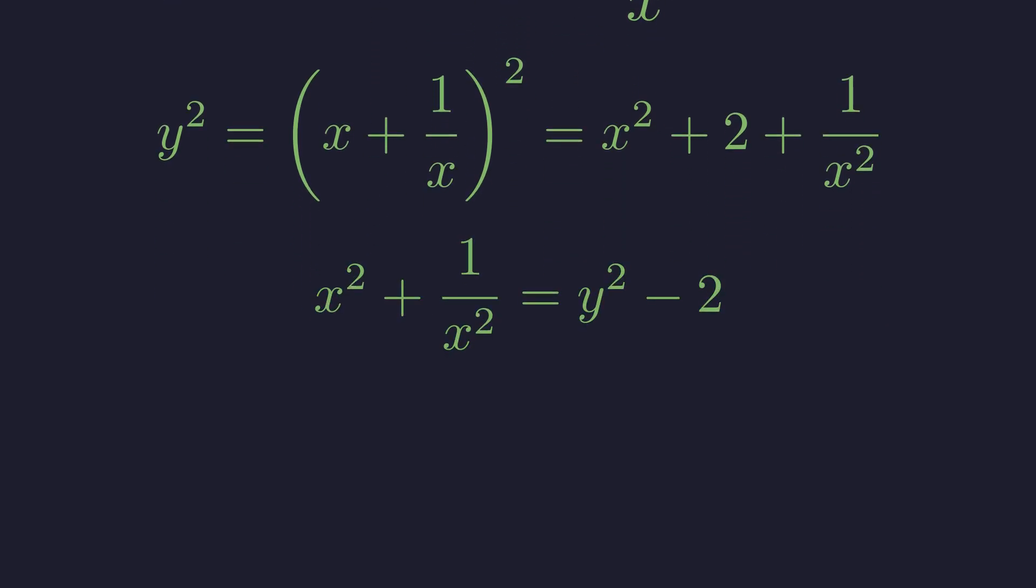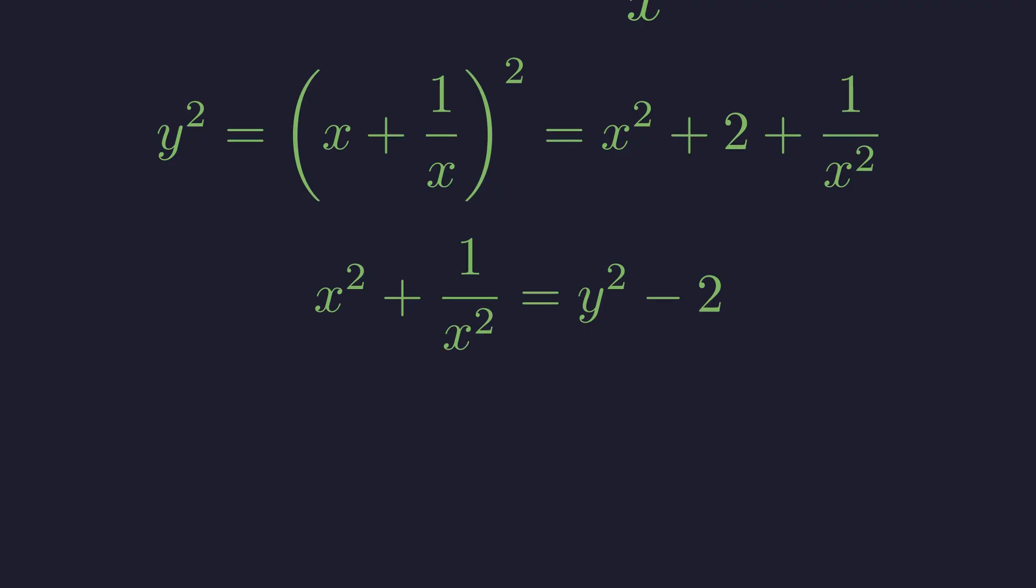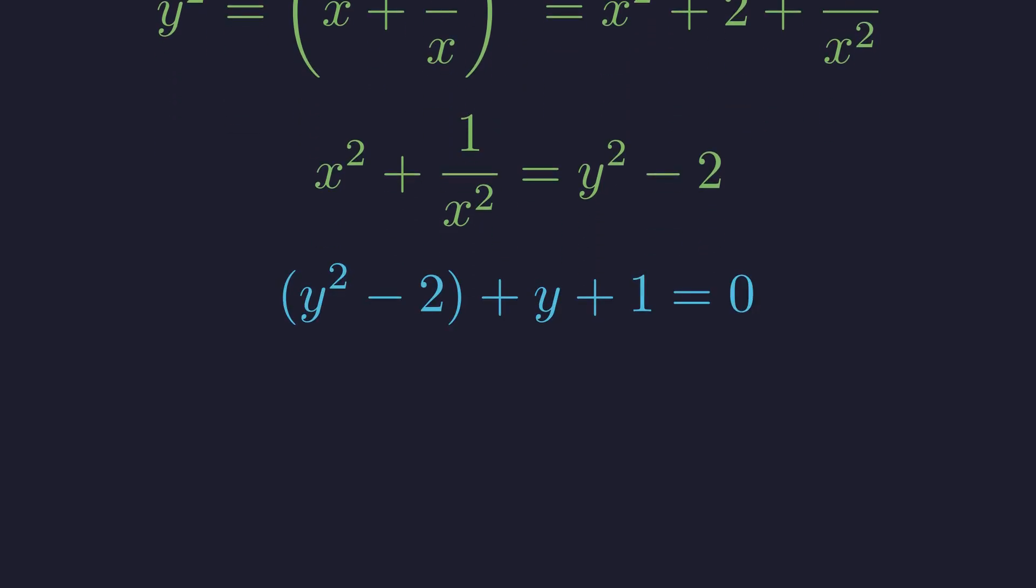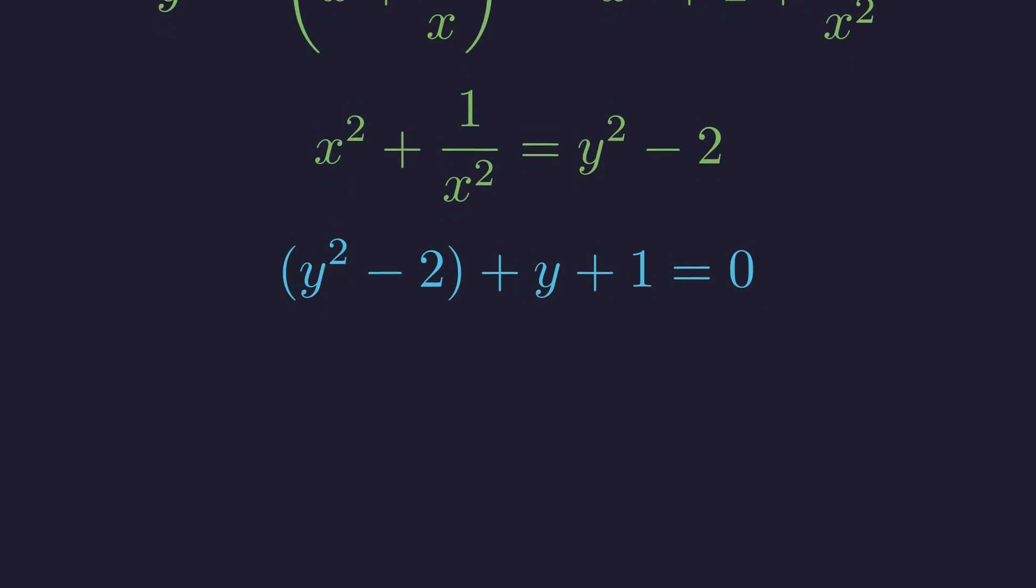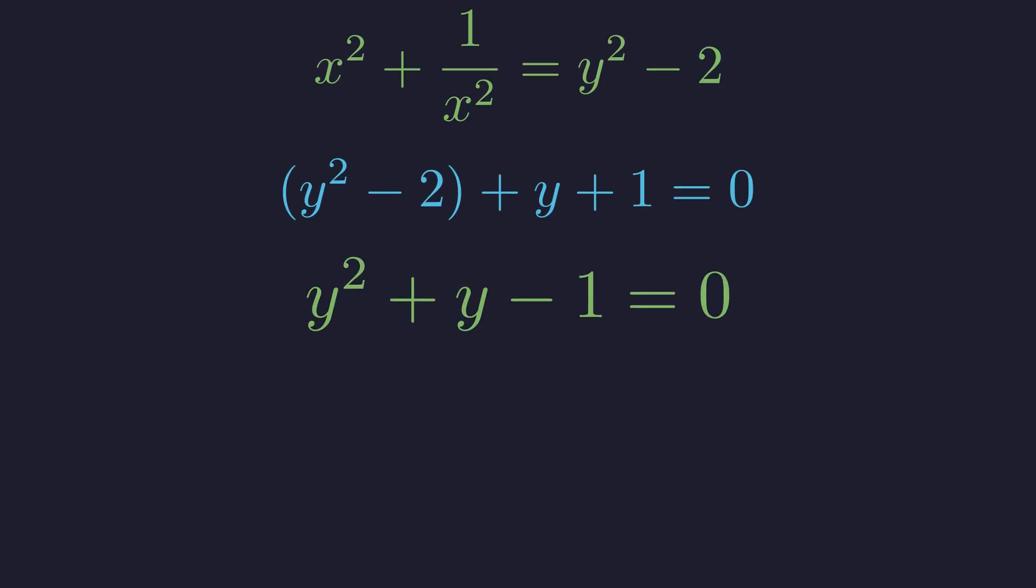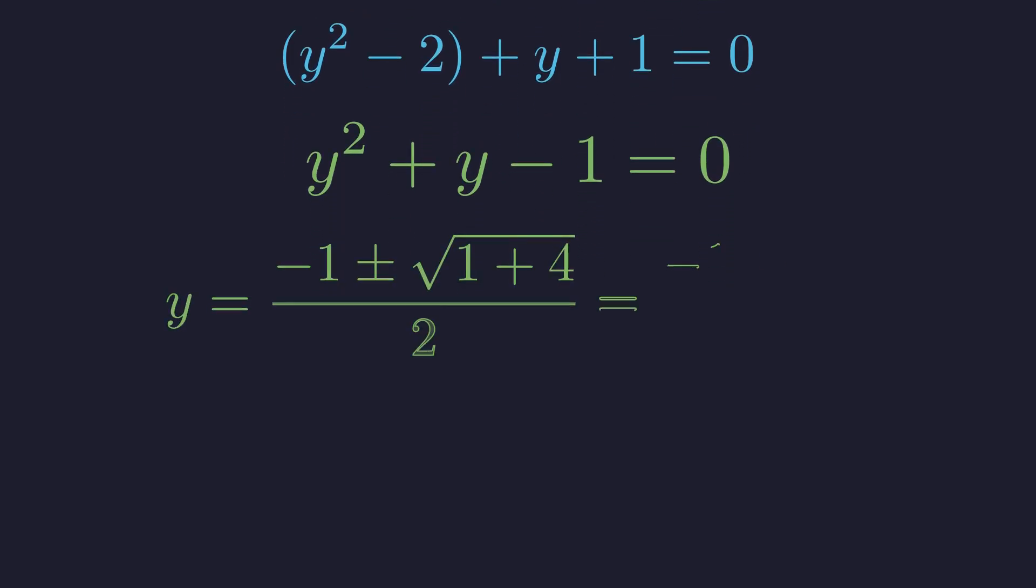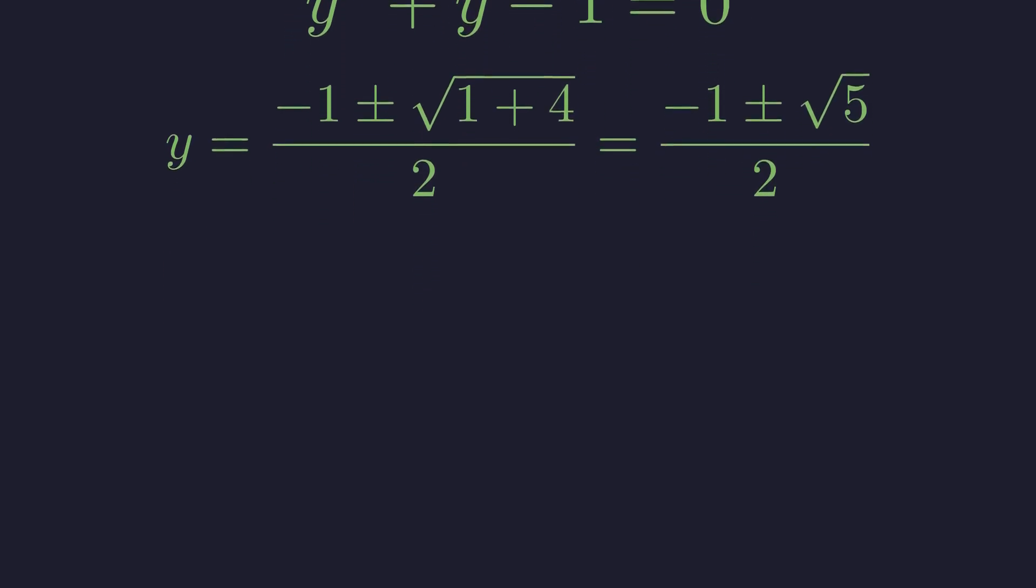When we square y we get x squared plus 2 plus 1 over x squared. Rearranging we find that x squared plus 1 over x squared equals y squared minus 2. Substituting back into our grouped equation we get this. Simplifying, our quartic has collapsed into this simple quadratic in y. This is the power of the reciprocal substitution. The quadratic formula gives us two values for y. These numbers will govern our complex roots. Let's call them y1 and y2. But remember y equals x plus 1 over x. So we still need to find the actual x values.